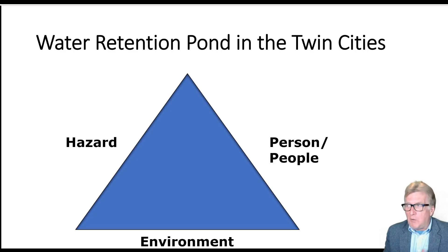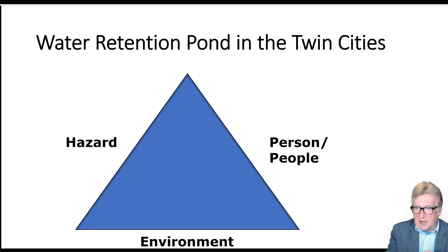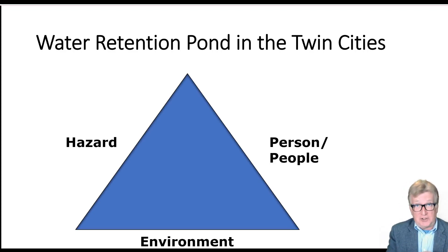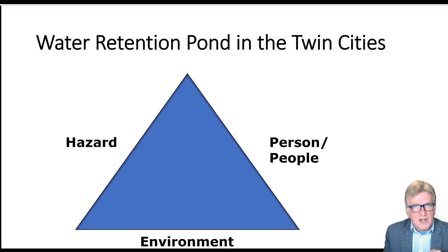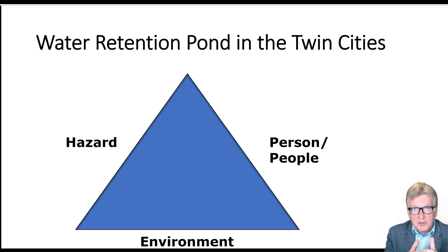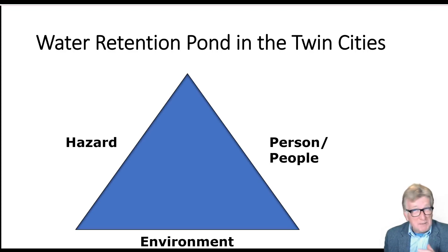This takes us back to video two, where I talked about what we refer to in public health as host, agent, and environment. I prefer to call it person or people, hazard — which is the same as agent — and environment. Remember, the environment isn't just the physical environment like temperature, coefficient of friction, or relative humidity. We're talking about cultural, social, and political environments and what types of people live or work in a particular environment.